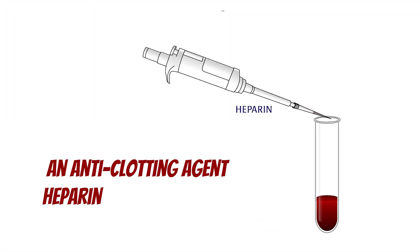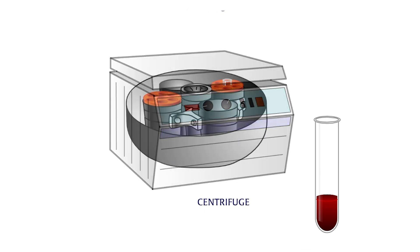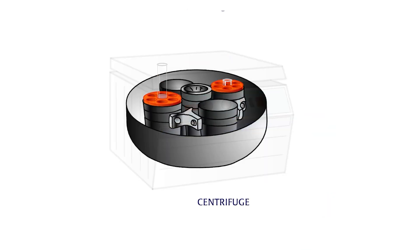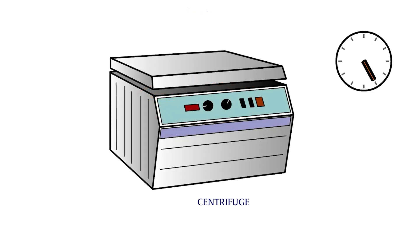Heparin, an anti-clotting agent, is added to the blood sample, which is then put into a centrifuge. The blood sample is spun in the centrifuge, thus separating out the various blood cell types.